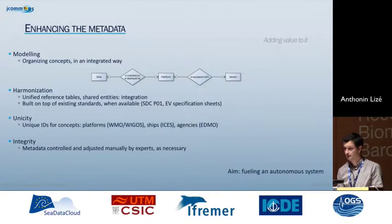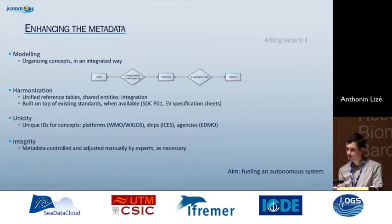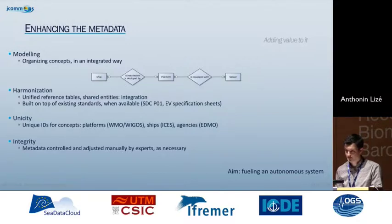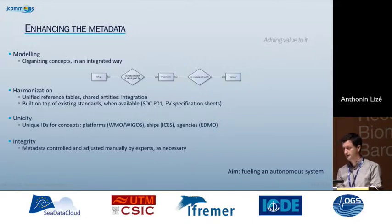Once we have gathered everything, we need to add value to this metadata. That starts with database modeling, and we try to do it in an integrated way with shared entities — for example, ships — so that in our database we can attach a ship to Argo float deployments or hosting of an OceanSITES station. We also work with the networks to harmonize vocabularies and metadata, building on top of what already exists, such as what has been done in CDI and SeaDataCloud. We also ensure uniqueness by using unique IDs for concepts like WMO IDs, and soon the YGOS ID for platforms, the ICES code for ships, and the EDMO code for agencies, and soon the ORCID for contacts.